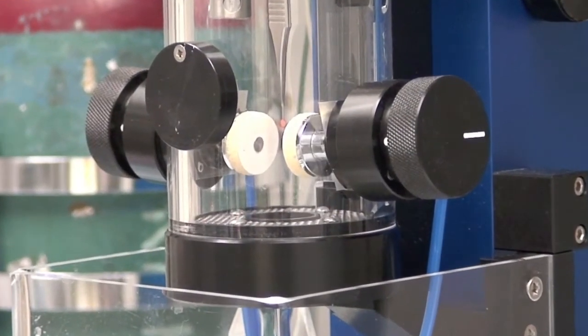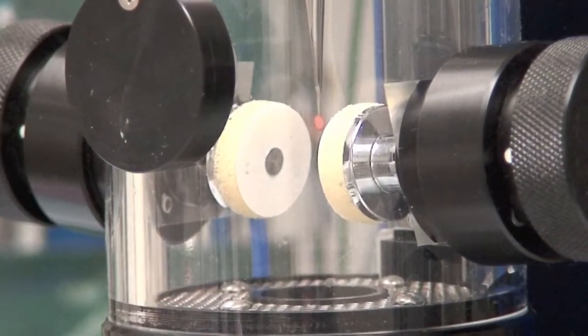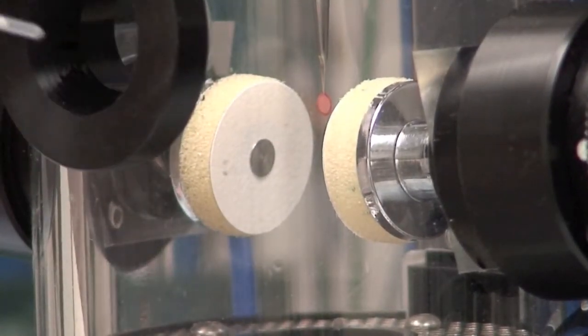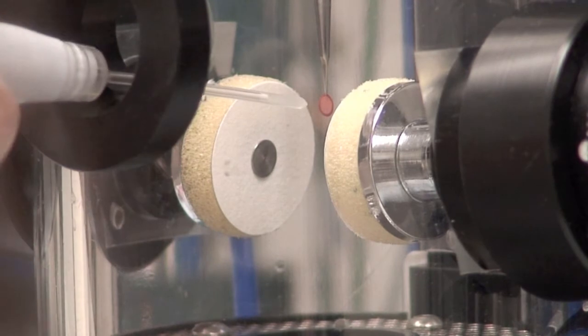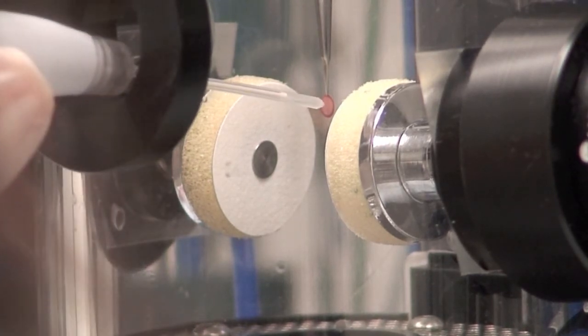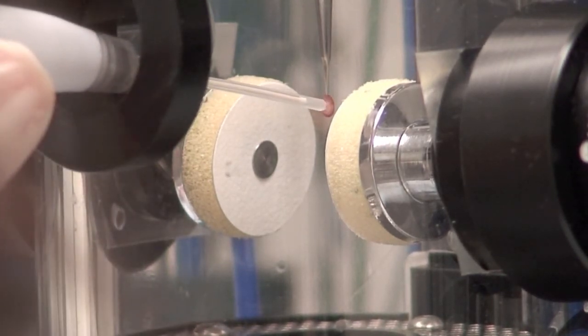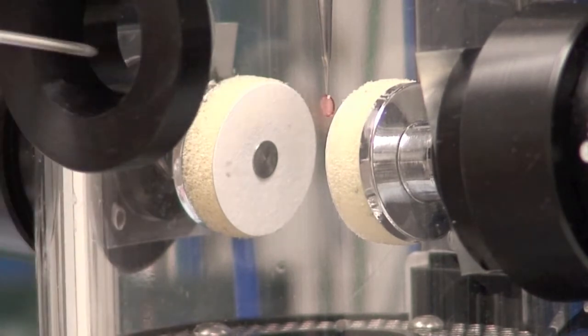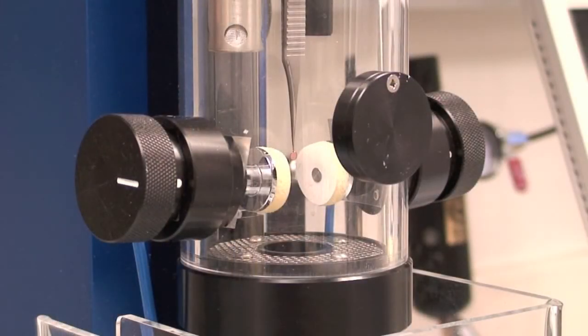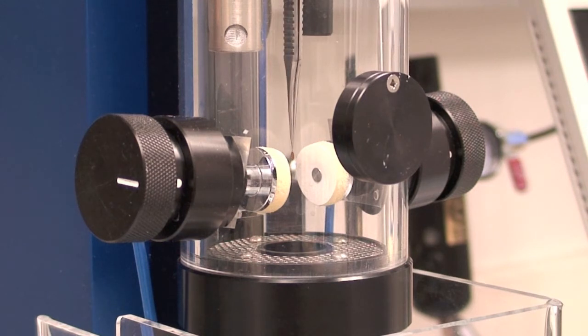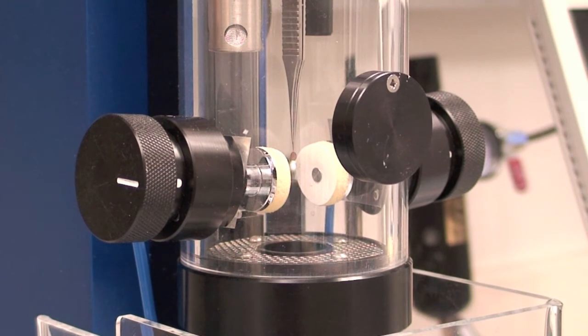Load approximately three microliters of specimen onto the grid through the front entry point. Close the lid when you're finished. Rotate plunge piston a quarter turn so that the face of the grid is facing the blotting pads. Make sure this is done or else your grid will be completely destroyed during the blotting process.